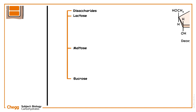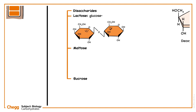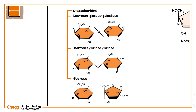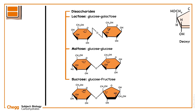Lactose is constructed from the monomers glucose and galactose. Maltose is composed of two glucose monomers. Sucrose is constructed from the monomers glucose and fructose.